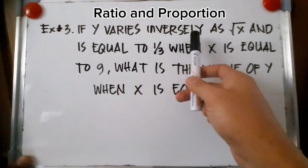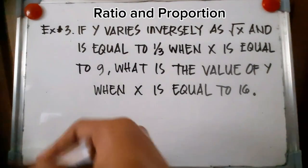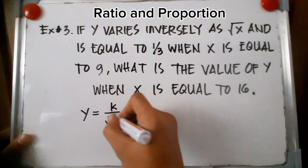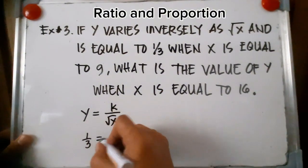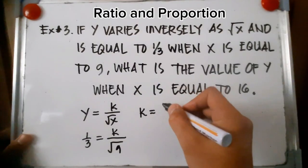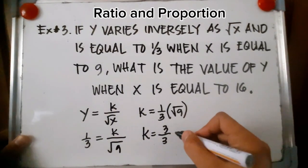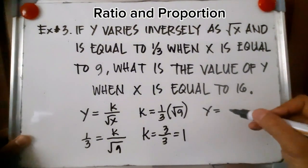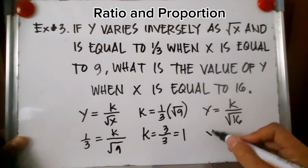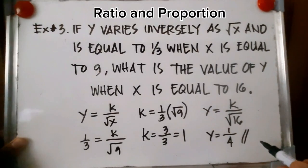Example number three: If Y varies inversely as the square root of X and is equal to 1 third when X is equal to 9, what is the value of Y when X is equal to 16? Y varies inversely as the square root of X. With Y equal to 1 third and X equal to 9, K equals 1 third times the square root of 9, which is 3 over 3, so K equals 1. Then if X is 16, Y equals K over the square root of 16, which is 1 over 4. Therefore, Y is 1 fourth when X equals 16.